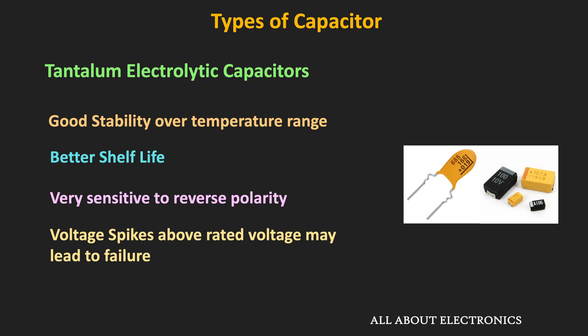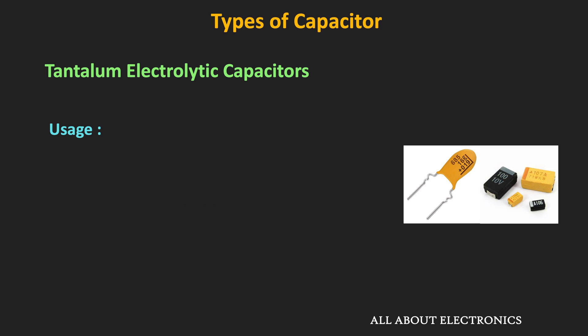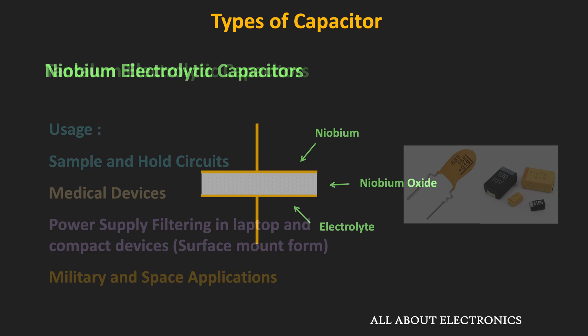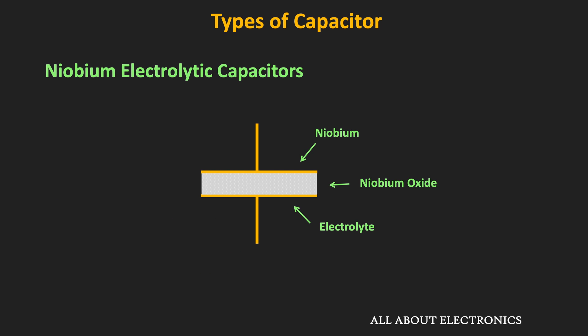Due to their reliability and good volumetric efficiency, tantalum capacitors are used in applications where good reliability is required and there is a size constraint. They are used in sample and hold circuits, medical devices, power supply filtering in laptops and compact devices, and sometimes in military applications. The third type of electrolytic capacitor is the niobium capacitor. It is not as popular as tantalum or aluminum, but in some capacitance and voltage ranges, it is used over tantalum because of its lower price.